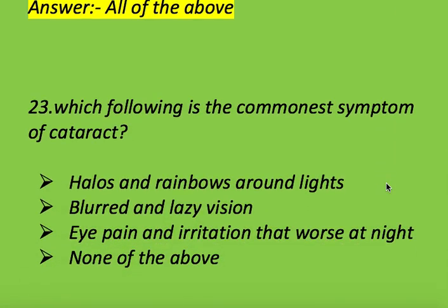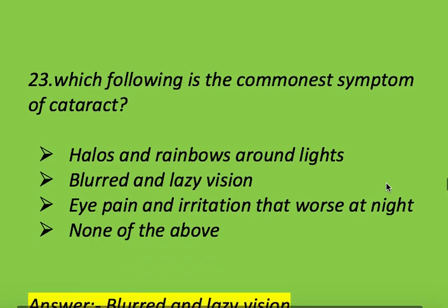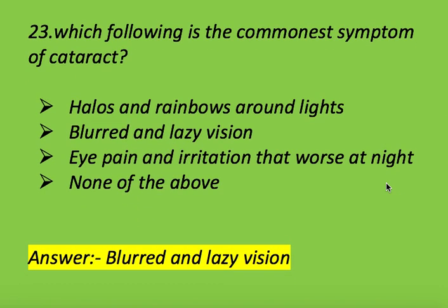Next question: what is the commonest symptom of cataract? Options: halos around light, blurred and hazy vision, eye pain and irritation, watering of eyes, and none of the above. Right answer is blurred and hazy vision. The commonest symptom of cataract is blurred and hazy vision.